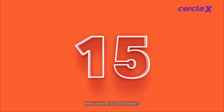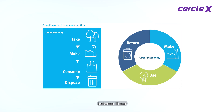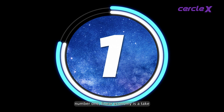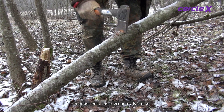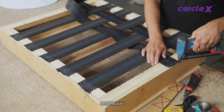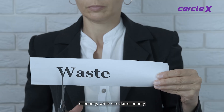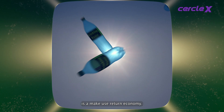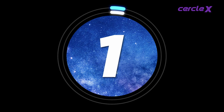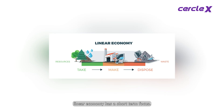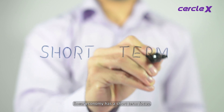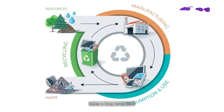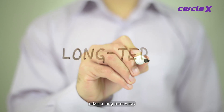Here are the 15 differences between linear and circular economy. Number 1: Linear economy is a take-make-waste economy, while circular economy is a make-use-return economy. Number 2: Linear economy has a short-term focus, while circular economy takes a long-term view.